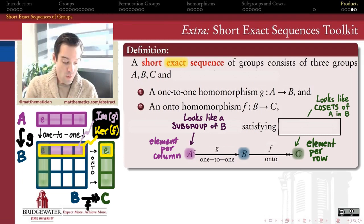On the other hand, we have the image of A inside of B. In other words, the image of the function G, which is my one-to-one homomorphism from A to B. That's this purple shaded row here.